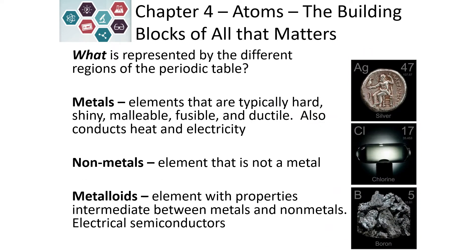The periodic table also has larger groupings such as metals, which are on the lower left-hand side of the periodic table, and non-metals, which are on the upper right-hand side. If it's a metal, the properties it exhibits are that it's hard, shiny, malleable — which means it's easy to shape — fusible, and ductile. Ductile means it's easy to stretch into wires.